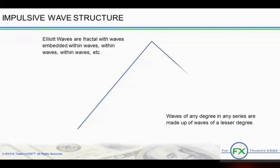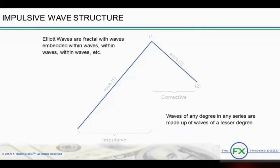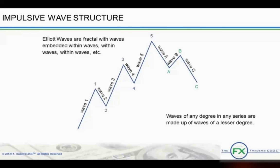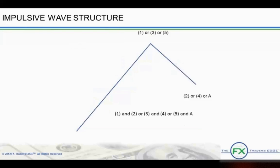Elliott Waves are fractal, with waves embedded within waves, within waves, within waves, etc. Waves of any degree in any series are made up of waves of a lesser degree. As such, this impulsive wave structure could easily be a 15-minute, hourly, daily, or weekly chart. The structure is the same in any time frame.